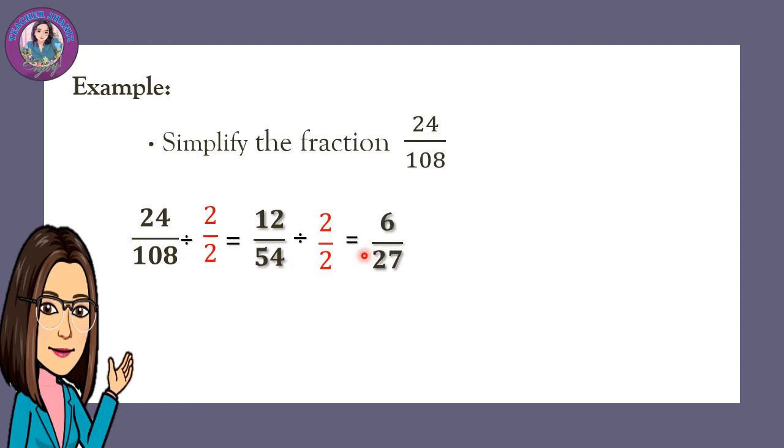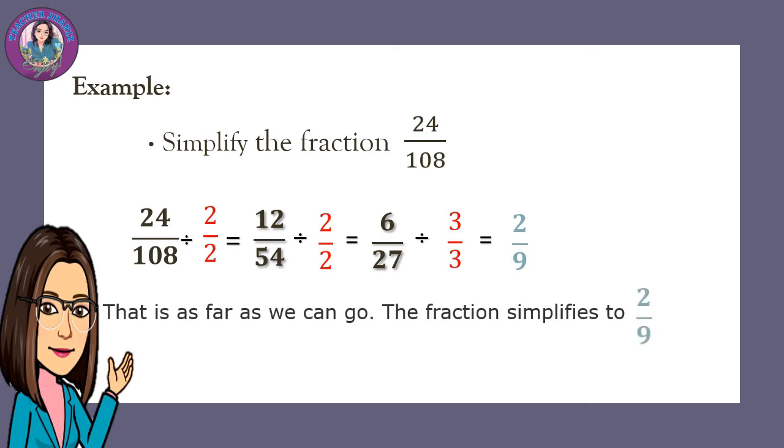6 over 27. 6 over 27 is still divisible by 3, so we will divide both the numerator and denominator by 3. 6 divided by 3 is 2, and 27 divided by 3 is 9. So the answer is 2 ninths. That is as far as we can go. The fraction simplifies to 2 ninths.